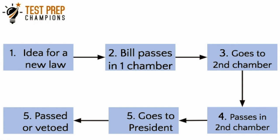If both chambers vote in favor, the bill goes to the president, who can either approve the bill or reject it — rejecting a bill is called a veto. If the president vetoes the bill, it goes back to Congress, and if a two-thirds majority vote in favor, it will become a law. The president can also defer making a decision, but the bill will automatically become a law after 10 days if the president takes no action and Congress is in session.